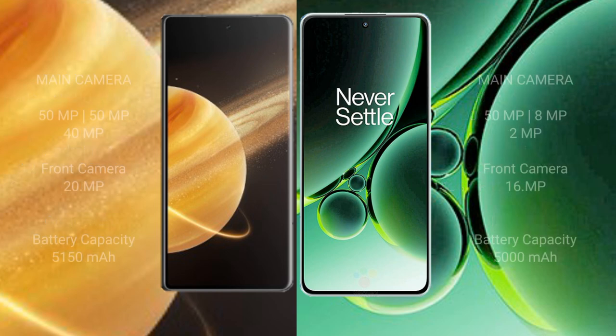Honor Magic V3 has a triple rear camera setup: 50MP, 50MP, and 40MP, with a 20MP front camera. OnePlus Nord 3 has a triple rear camera setup: 50MP, 8MP, and 2MP, with a 16MP front camera.